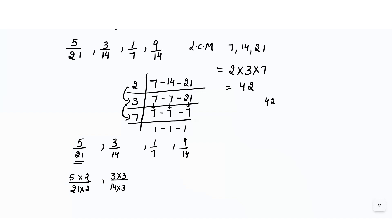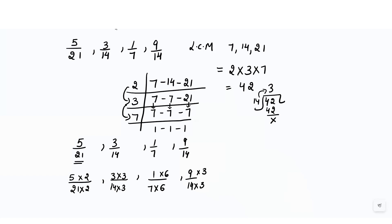Dividing 42 by 14 gives 3, so multiply 14 by 3 to get 42. Similarly, multiply 7 by 6, and multiply the other 14 by 3. The converted fractions are 10/42, 9/42, 6/42, and 27/42.